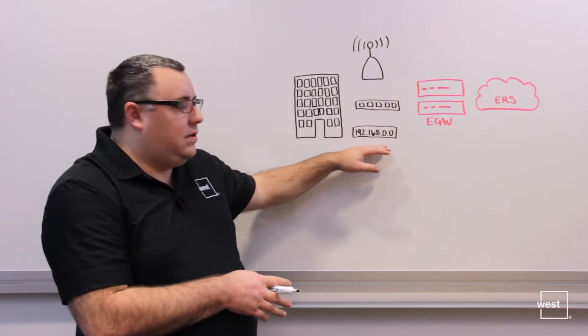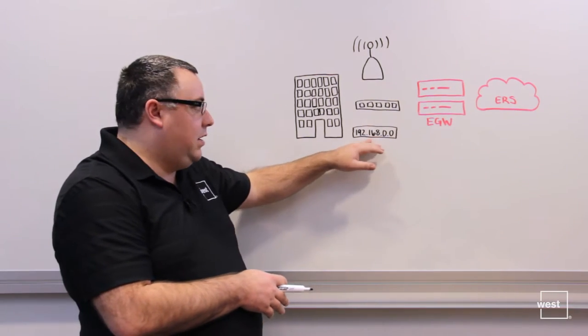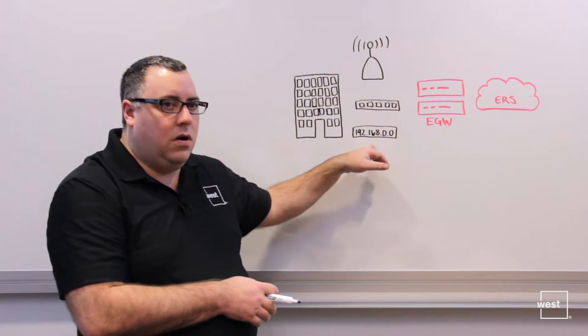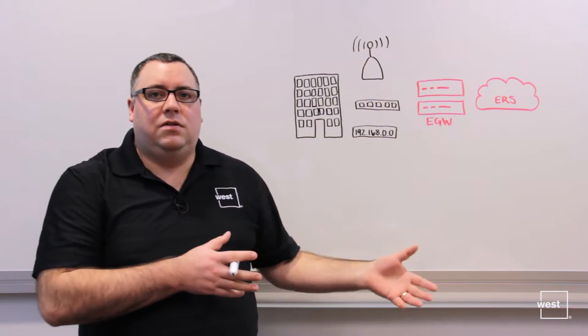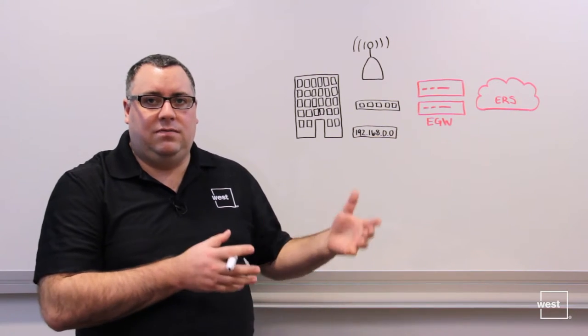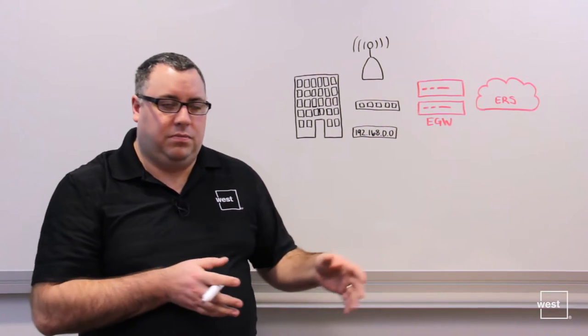You would tie a location to an IP subnet. For example, 192.168.0.0 lives on the first floor of this building. You can assign this to different voice VLANs or data VLANs depending on your topology.